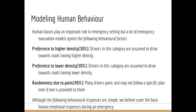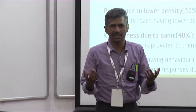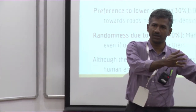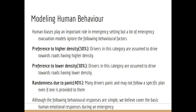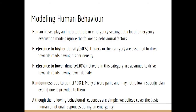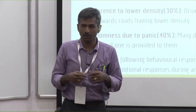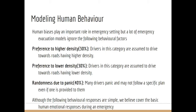We modeled three human behaviors. First, preference for high density: a driver sees many people going in one direction and follows them without a specific goal. Second, preference for lower density: a driver deliberately chooses a less-congested direction. Third, randomness due to panic: drivers who are not actively thinking simply pick a random route and go. These are the human behaviors modeled, with proportions assigned through trial and error.